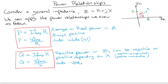For reactive power, it's very similar, except we use the reactance, denoted by X. It's the RMS current squared multiplied by the reactance, or the RMS voltage squared divided by the reactance. Since X can be positive or negative, Q can be positive or negative depending on whether the load is capacitive or inductive. The units are in VARs.